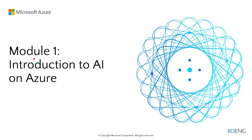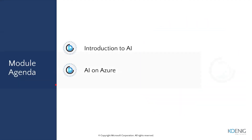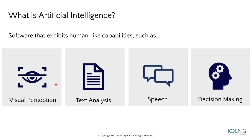So we talk here about the first module, which was Introduction to AI on Azure. We discussed here about introduction to artificial intelligence and understood the different technologies we are already working on, like visual needs, perception, text analytics, speech, and decision-making. Before that, we were talking about the basic concept — what exactly intelligence is, what is the meaning of RDB intelligence, and the different capabilities.